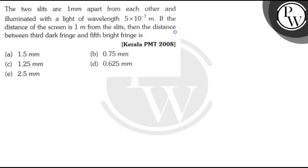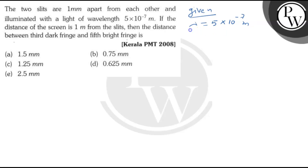We need to find the distance between the third dark fringe and the fifth bright fringe. We will now solve the question. Given: wavelength λ = 5 × 10⁻⁷ meter, capital D (distance between slit and screen) = 1 meter.